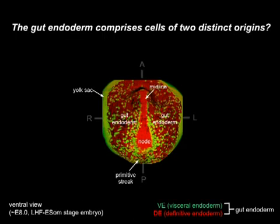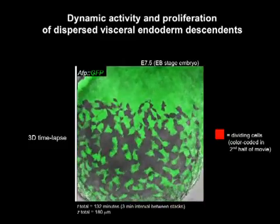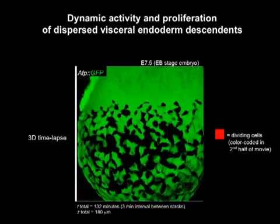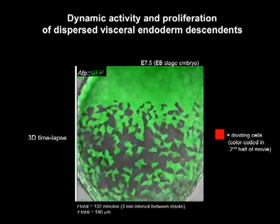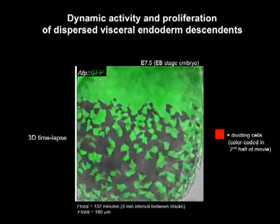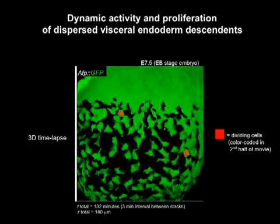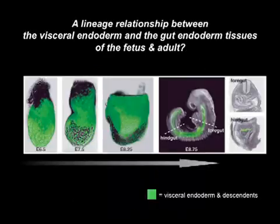You can get a better idea of the distribution of these two populations of cells in this view of a headfold-stage embryo. This image also reveals another unexpected observation: these dispersed visceral endoderm cells become organized around midline structures, including the primitive streak and node, something we don't currently understand. Imaging of visceral endoderm descendants after their dispersal, as shown in this time-lapse movie, reveals that they are highly dynamic — extending and retracting projections, appearing to avoid one another, and usually found as single cells. Moreover, they divide, as highlighted here in red, supporting the notion that these cells are maintained by the embryo as it grows and suggesting they may be poised to contribute to the later fetus and adult.